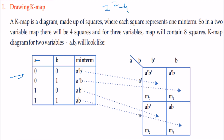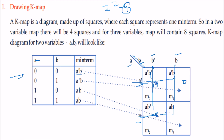To draw a K-map, check how many variables there are. For 2 variables, 2 to the power 2 gives 4 boxes. Draw a diagonal line in one box with A on one side and B on the other. Label A-dash and A across the top, B-dash and B down the side. The intersections give A-dash B-dash, A-dash B, A B-dash, A B — corresponding to M0, M1, M2, M3.